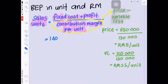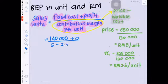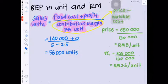Now you continue the calculation using Contribution Margin Formula. Based on the question, total fixed cost per unit is RM140,000 and at the break-even point, the profit must be 0. Then you will divide the total by selling price minus variable cost. You will get 56,000 unit.